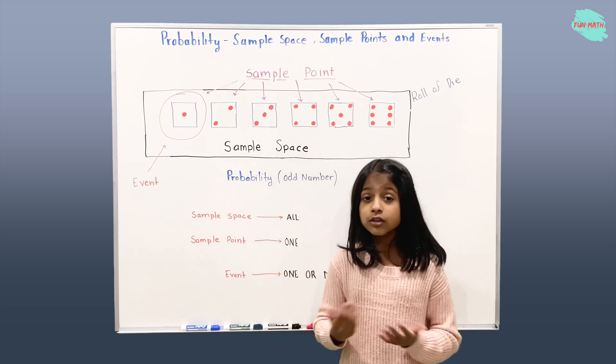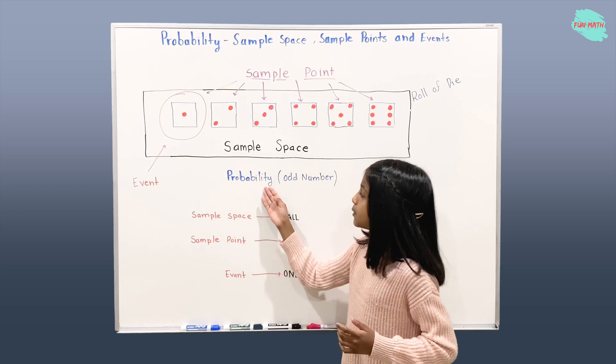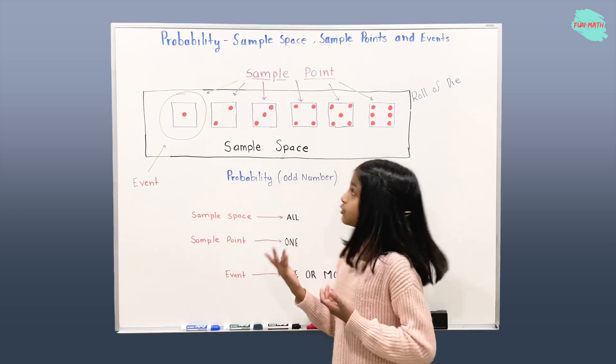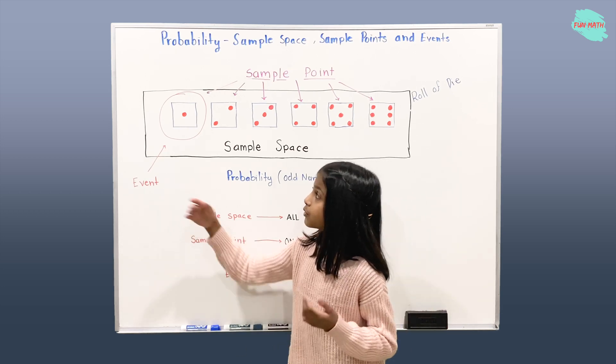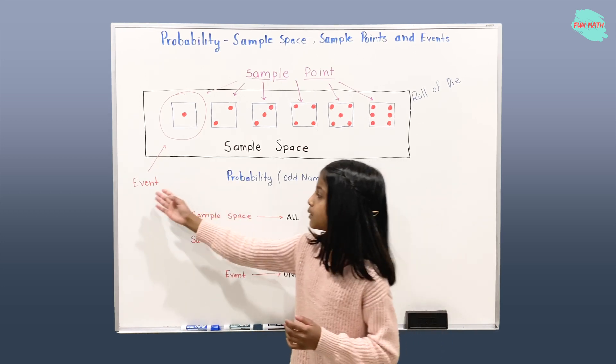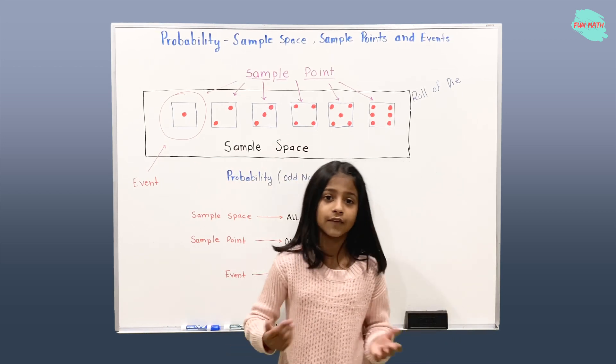And we also talked about the event. So the probability of getting an odd number is 1, 3, and 5, right? So we found out that the 1 can be 1 event. And 1, 3, and 5 can be another event.